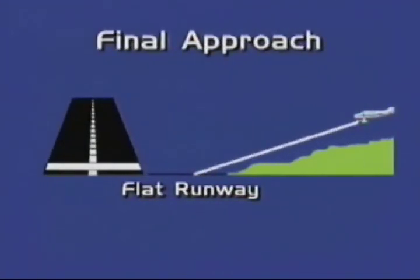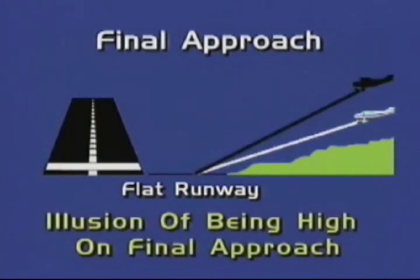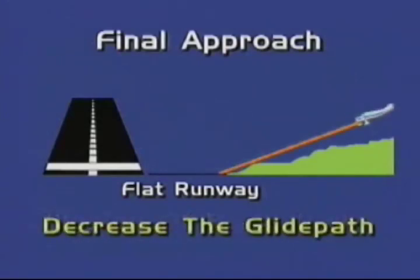A final approach over downsloping terrain with a flat runway may produce the visual illusion of being high on final approach. If believed, you may respond by pitching the aircraft nose down to decrease the glide path, which, if performed too close to the ground, may result in an accident.